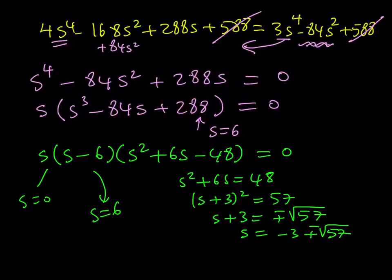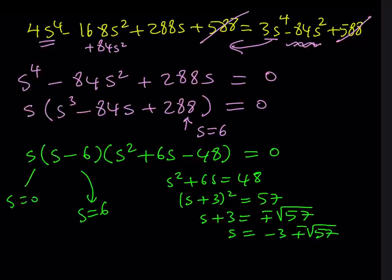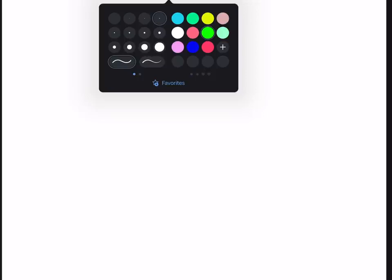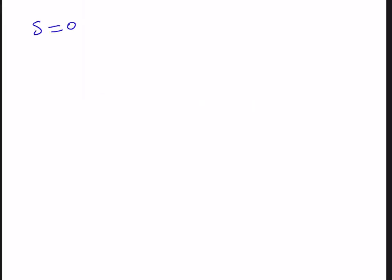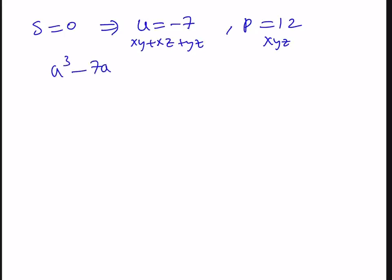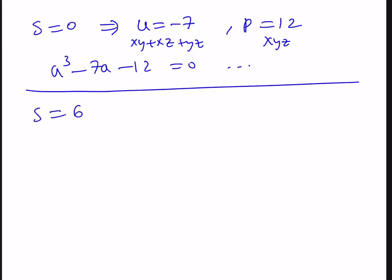Let's examine each case. If S equals 0, it might look simple but it's not. Substituting gives U equals negative 7 and P equals 12. Using Vieta's formulas, x, y, z satisfy a cubic equation whose solutions are very messy, so I'll skip that case and leave it for you to work out.